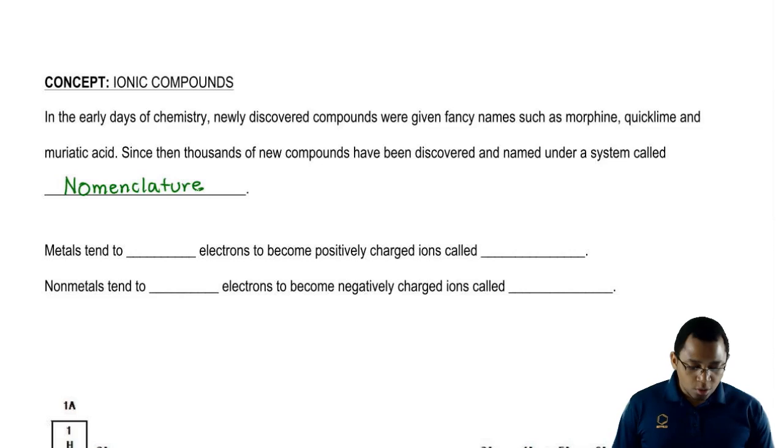Metals will tend to lose electrons. Because if you're going to be a positive ion, you have to be losing your negative electrons. They're going to become positively charged ions, which we just said were cations.